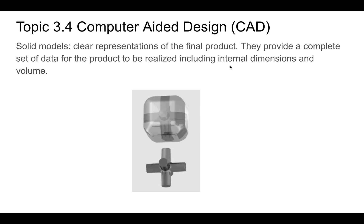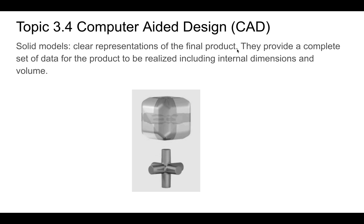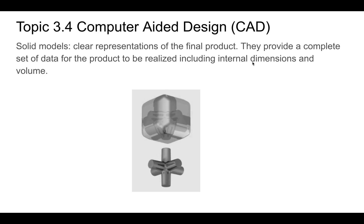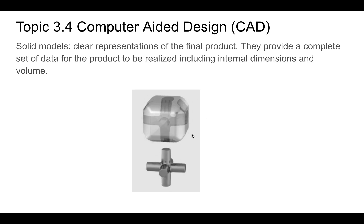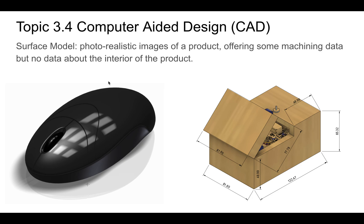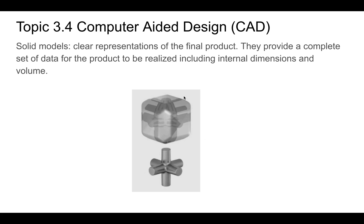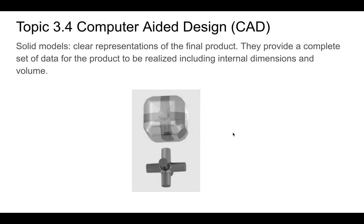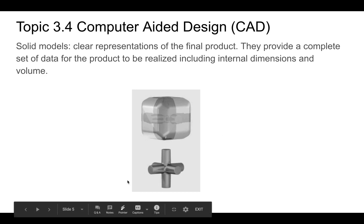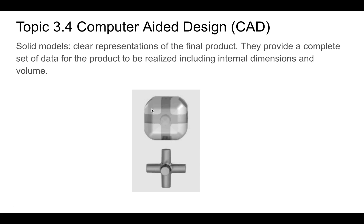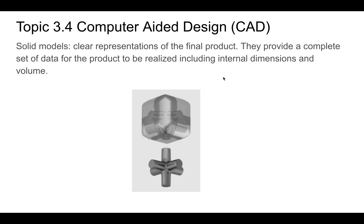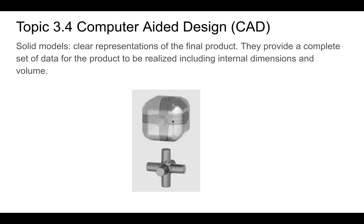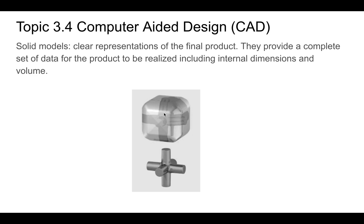A solid model gives you a clear representation of the final product and has data for the product to be realized, including internal dimensions and volume — so you understand what's inside an object as well. A solid model includes stuff that's inside, compared to a surface model, which is really only focused on the outside.